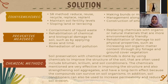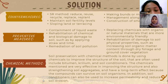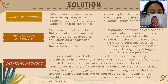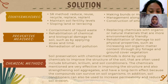The third solution is the chemical method. Soil preservation with chemical methods is done by using chemicals to improve the structure of the soil. Compounds often used include bitumen, polymer, and soil conditioners. These chemical treatments are very effective in improving soil structure and strengthening soil aggregates, with long-term effects since the compounds can survive in soil organisms. In addition, soil conditioners can also be used to increase permeability and reduce soil erosion.